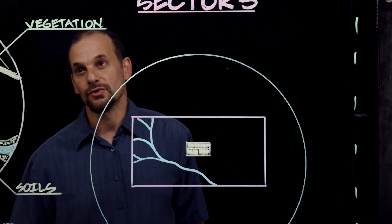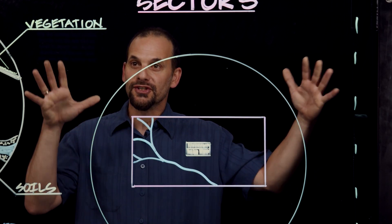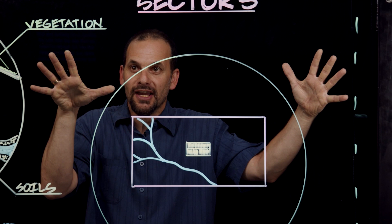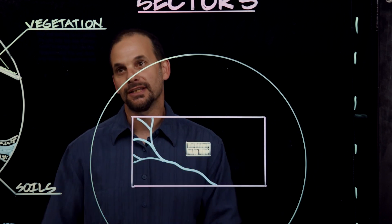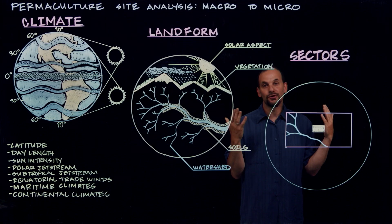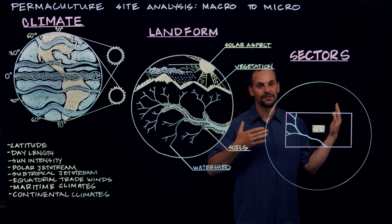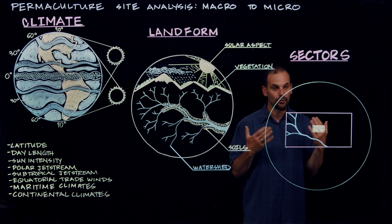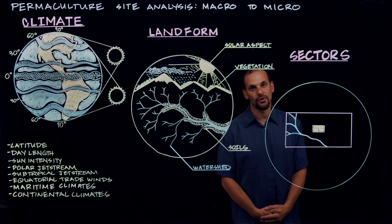With the sector compass, we show specifically the forces that are coming from outside of the site into the site that we need to design for. We're talking about things like the sun, so the direction the sun rises and sets in the summer and the wintertime, and which direction it shines on our site from.